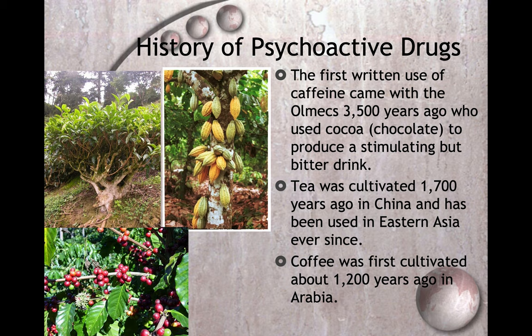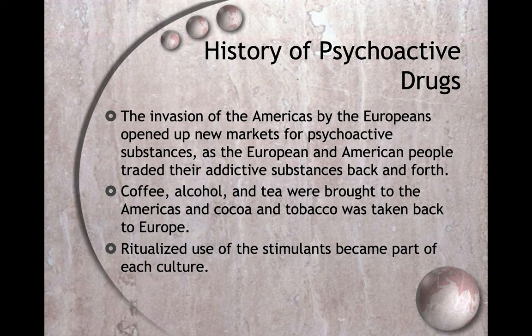The first written use of caffeine came from the Olmecs 3,500 years ago, who used coca or chocolate to produce a stimulating but bitter drink — they hadn't mixed it with sugar yet to make milk chocolate or hot chocolate. Tea was cultivated 1,700 years ago in China and has been used in Eastern Asia ever since. Coffee was first cultivated about 1,200 years ago in Arabia.